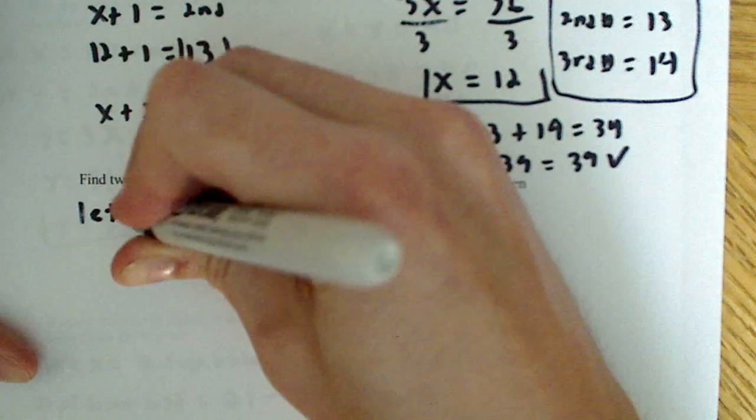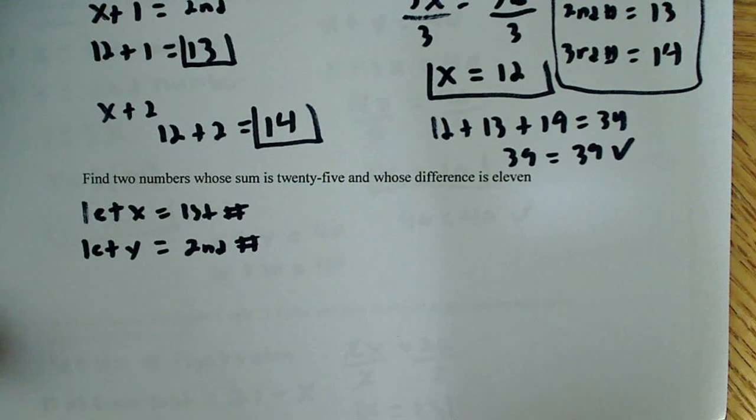First I'm going to say let x equal the first number, and I'm going to say let y equal the second number. Okay, because it says right there we have two numbers, two variables, x and y.